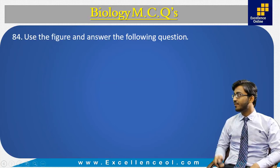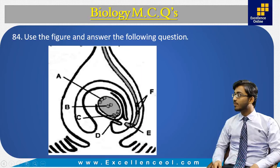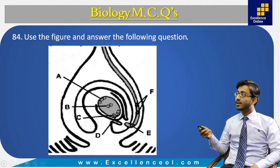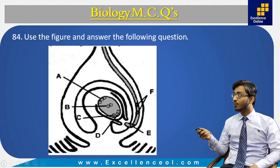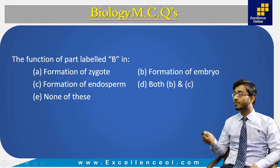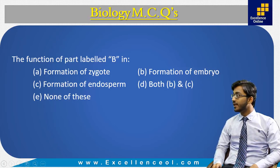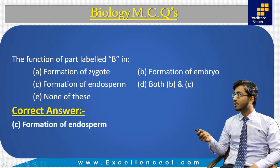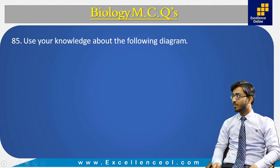Next MCQ 84: use the figure and answer the following. We have labels A antipodal nucleus, B diploid, and C synergid nucleus. Remembering the life cycle of angiosperms, the diploid nucleus due to double fertilization is converted into endosperm. So the function of part labeled B is formation of endosperm. The correct answer is C: formation of endosperm.